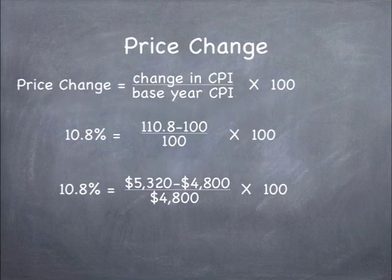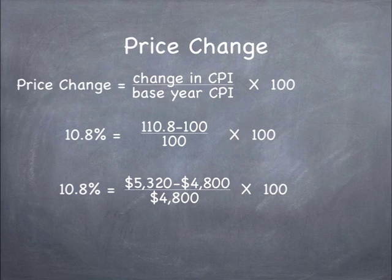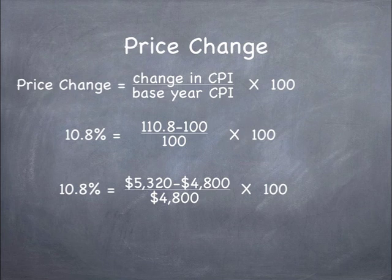The price change equals the change in CPI divided by the base year CPI, times 100. Taking 110.8 minus 100, divided by the base year CPI of 100, times 100 gives us 10.8%. Alternatively, you can use the difference in spending: 5,320 minus 4,800 divided by 4,800, times 100, which also gives us 10.8% for the price change.